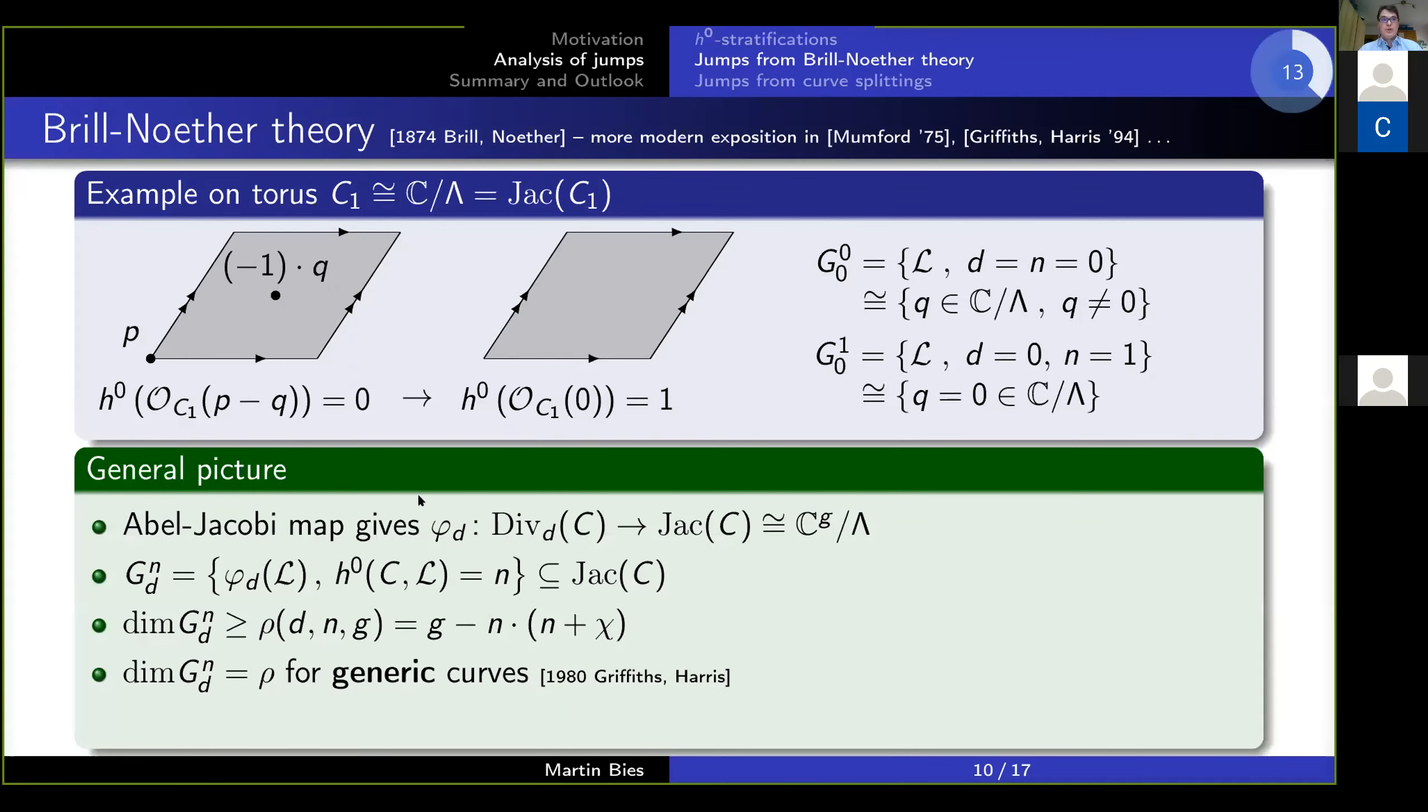Namely, first of all, for higher genus curves, there is a distinction between the curve and its Jacobian. In genus one, these are actually isomorphic to each other, but for higher genus, that's not true. Nonetheless, there is the Abel-Jacobi map, which allows you to consider line bundles as subsets of the Jacobian. Then again, we define the images of these bundles in the Jacobian collectively by considering all line bundles which have n sections. This is the space G^n_d.